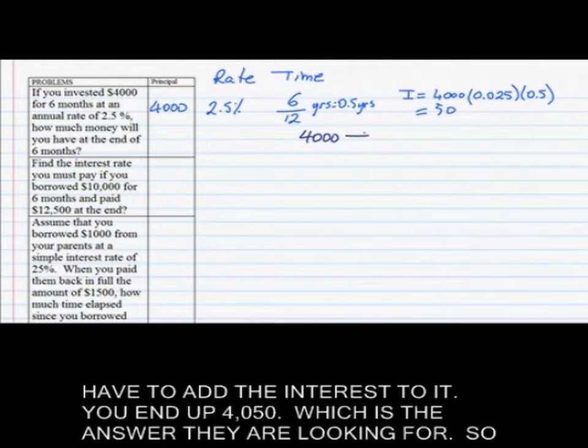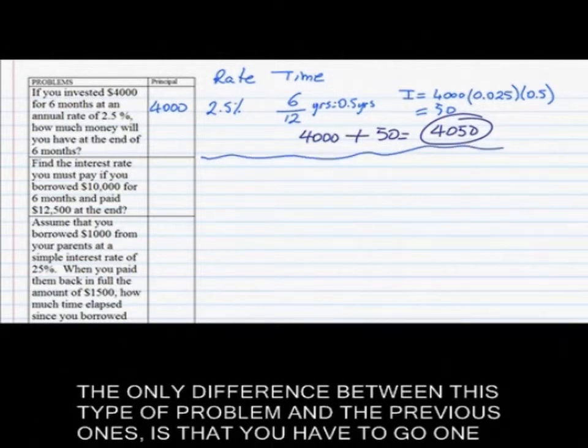But that's not what they are asking. They are saying, how much money will you have? That means you have to add the interest to your principal. Your principal initially was 4,000. Then you add the interest to it. You end up with 4,050, which is the answer they are looking for. The only difference is that you have to go one more step with this one.